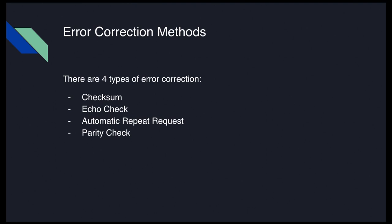There are four main types of error correction methods we're going to cover for transmitting data, plus one more for data entry. Those methods are checksum, echo check, automatic repeat request, and parity check.